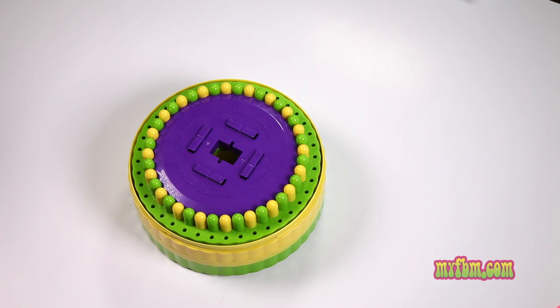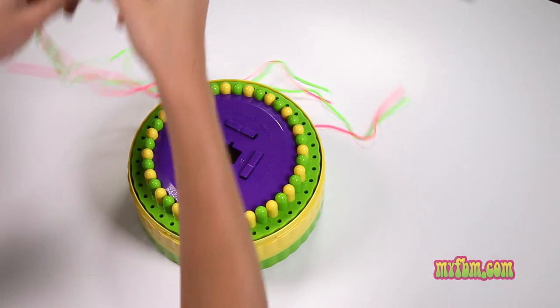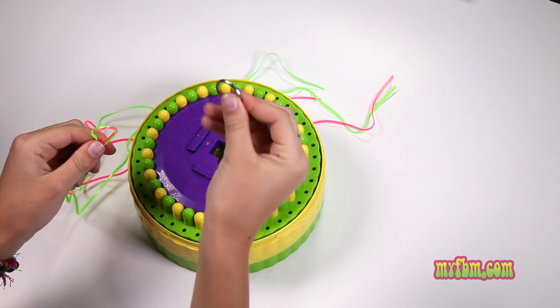Now I'm going to show you how to make a lanyard with a cobra knot. To make the cobra knot you need two plastic laces and a keyring.